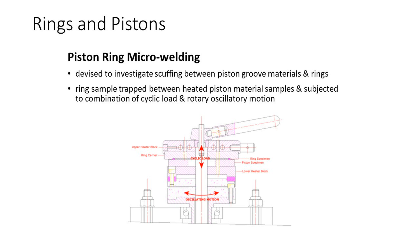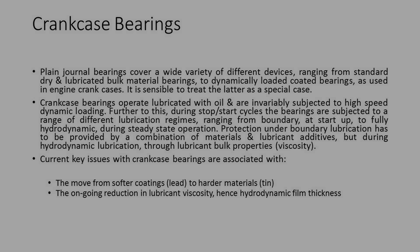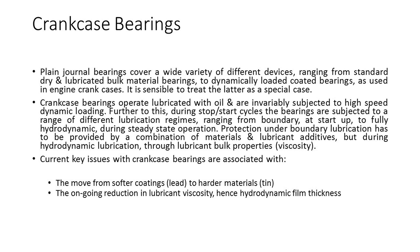A derivative of the RRV compatible with a standard rotary tribometer uses a stationary section of cylinder liner and a rotating ring sample carrier. This arrangement works satisfactorily with smaller bore diameter liners, but does require the liner to be cut into short lengths, which can prove problematic. The piston ring micro-welding test was devised to investigate scuffing between piston groove materials and rings. A ring sample is tracked between heated piston material samples and subjected to a combination of cyclic load and rotary oscillation.